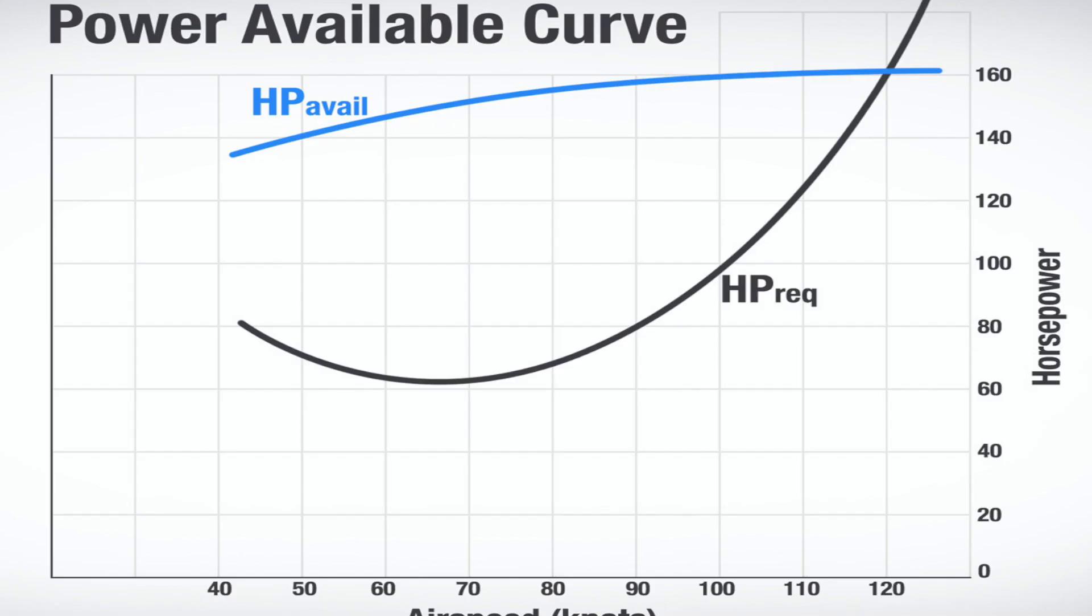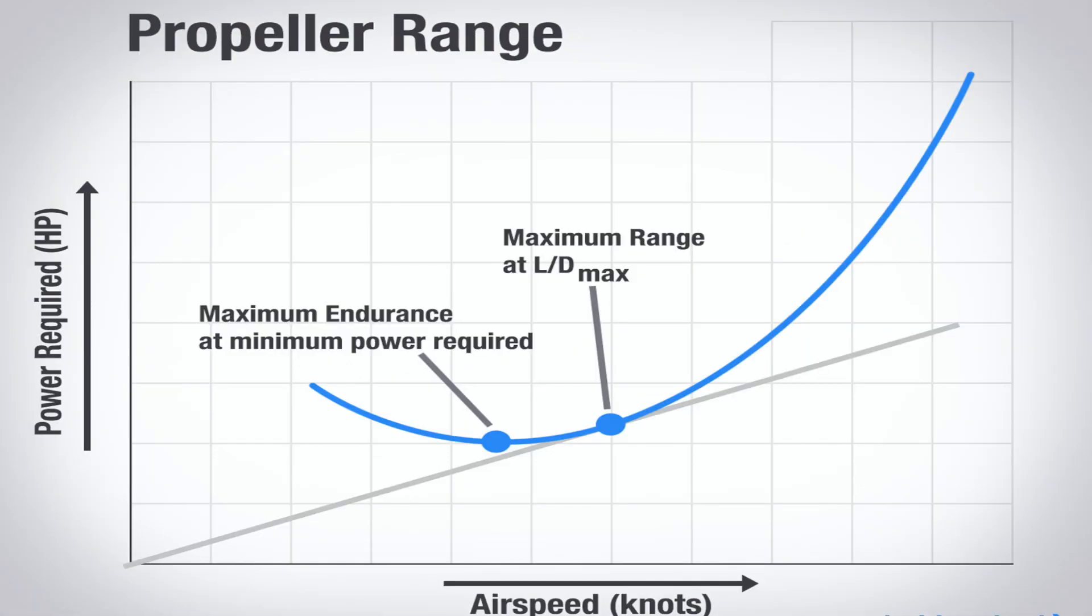Propeller driven aircraft use the power required curve, which is easy to calculate—simply multiply the total drag by the velocity at each point along the curve. That becomes the power required curve. L/D max is no longer at the lowest point of the curve, it moves up.